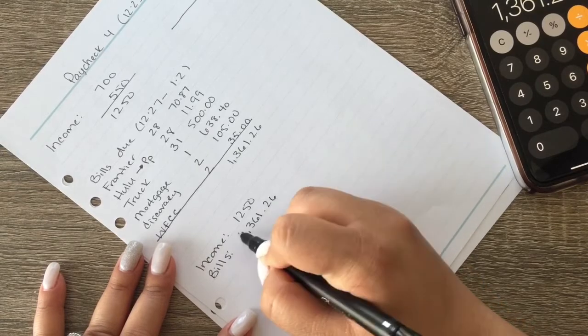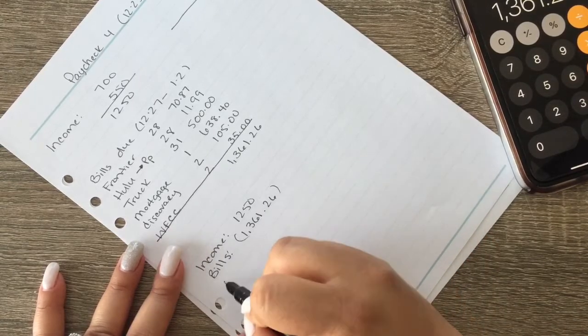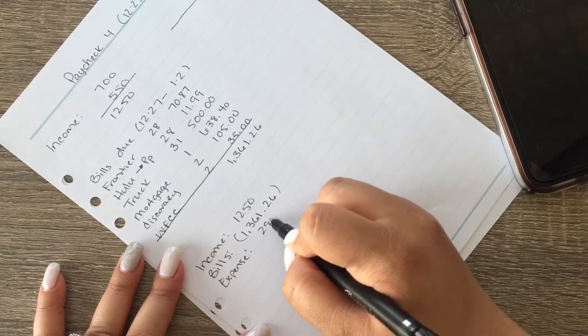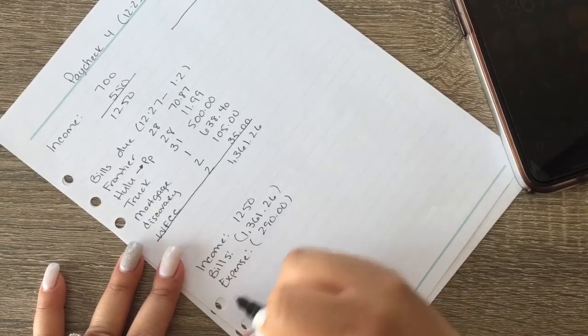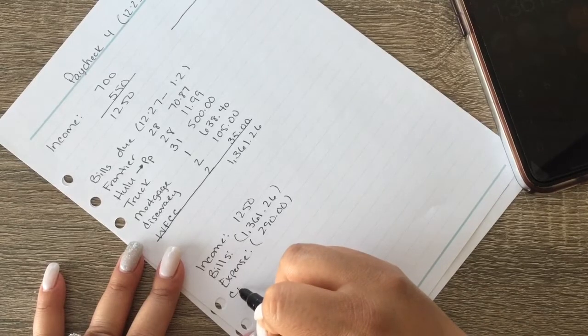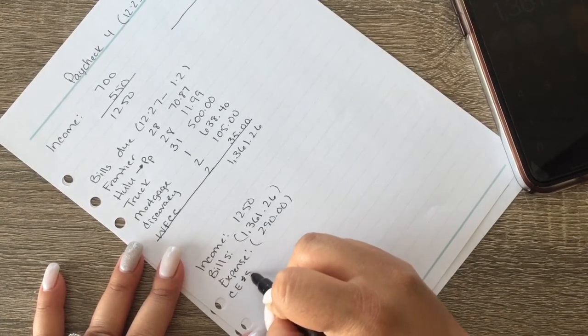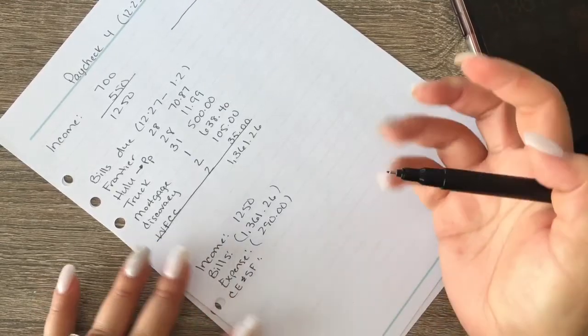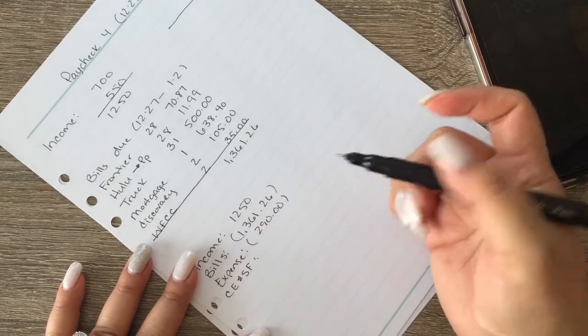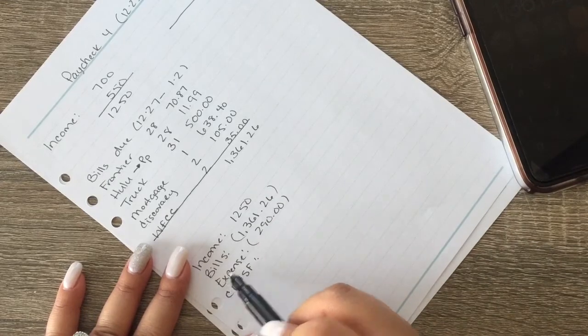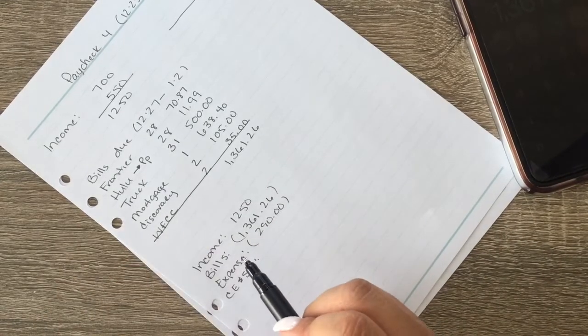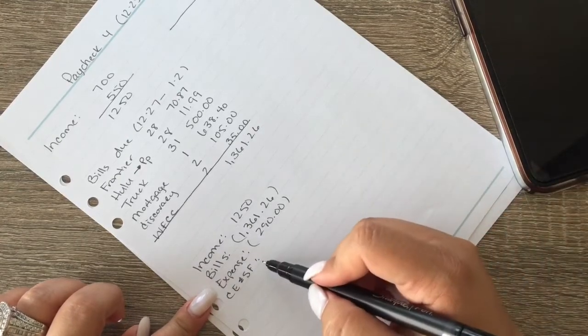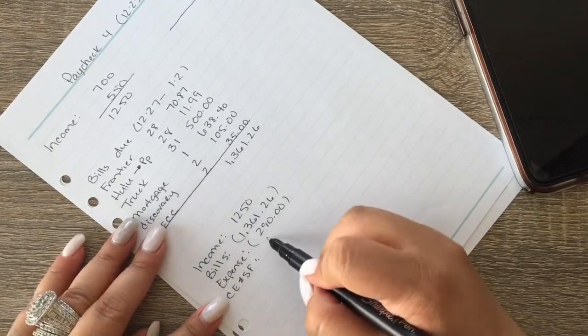And then our expenses which is my cash envelopes is $290, and then our cash envelopes and sinking funds, I don't know, when I think of sinking funds I always think of cash envelopes. This is actually our cash envelopes because these are expenses like our food, groceries and stuff, and then this is our sinking funds really which is $210.